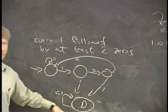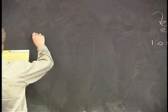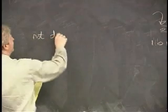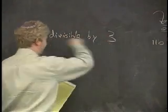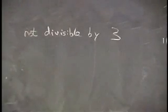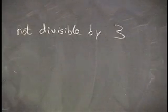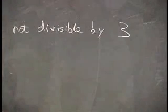One more example and then we're done. This is a little bit trickier, but not too bad. Binary strings that are not divisible by three. So now you don't have the nice power of two thing where you can just look at the end of the symbols.